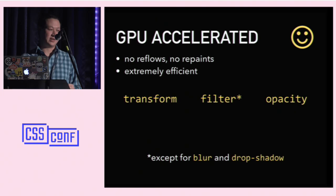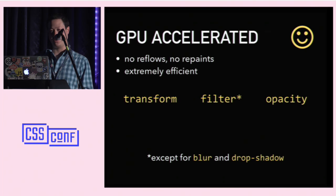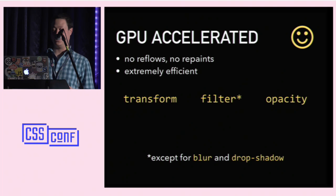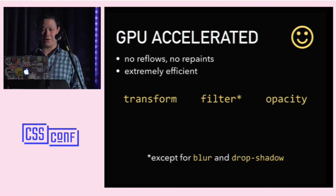When you animate these properties, your browser finds the element being animated and promotes it into what is called a compositor layer — very easy for your GPU to animate around, independently of anything else on the page. The three properties are: transform, which lets you move, scale, rotate, or skew things; filter, which lets you change hue, convert to grayscale, or adjust contrast and saturation — though blur and drop shadow are not GPU accelerated and will cause repaints; and finally opacity, which lets you fade things in and out.